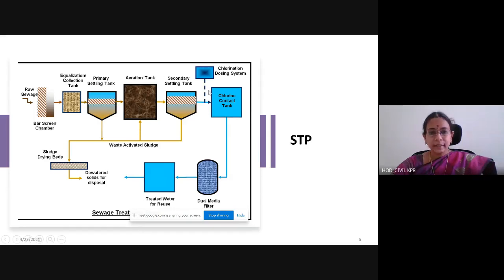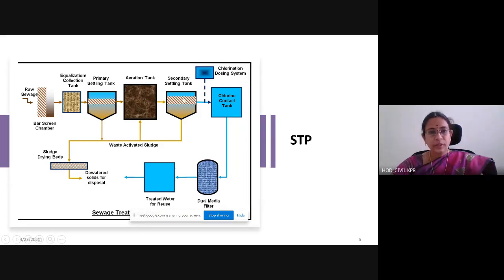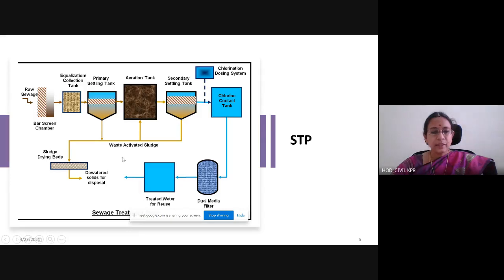Then it is moved to the secondary settling tank. Here, some particles that might not have settled — because of their size or discrete characteristics — when aeration is given, these particles may join together and form a floc. So larger-sized particles are also settled here in the secondary settling tank. After settlement, the debris or settled particles are collected together and it is called activated sludge.